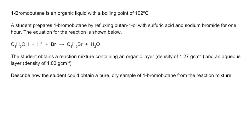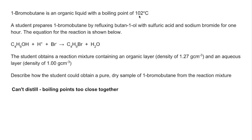The student obtains a reaction mixture containing two layers: the organic layer with a density of 1.27 grams per cubic centimetre, and the aqueous layer with a density of 1 gram per cubic centimetre. How could they get a pure dry sample of 1-bromobutane from that mixture? The problem is the boiling point is so close to 100°C that distillation is out of the question — if you tried to distil it and kept the temperature at 100°C, some of the organic product would come over.